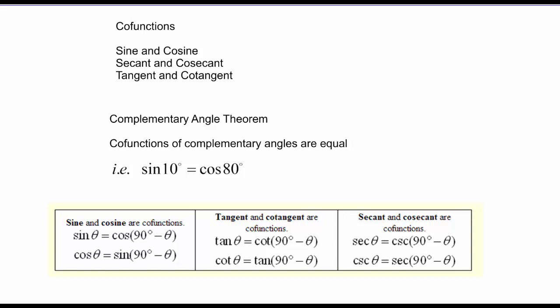So let's talk about another set of definitions. I'm going to talk about something called co-functions. And by definition, the values of sine and cosine, secant and cosecant, tangent and cotangent are all called co-functions. And there's a complementary angle theorem that states co-functions of complementary angles are equal.